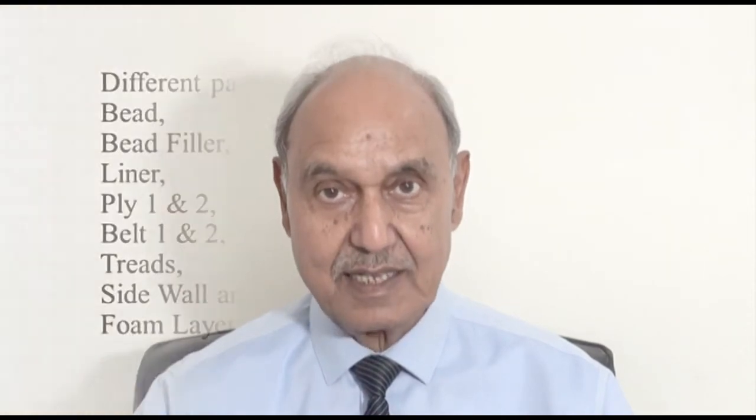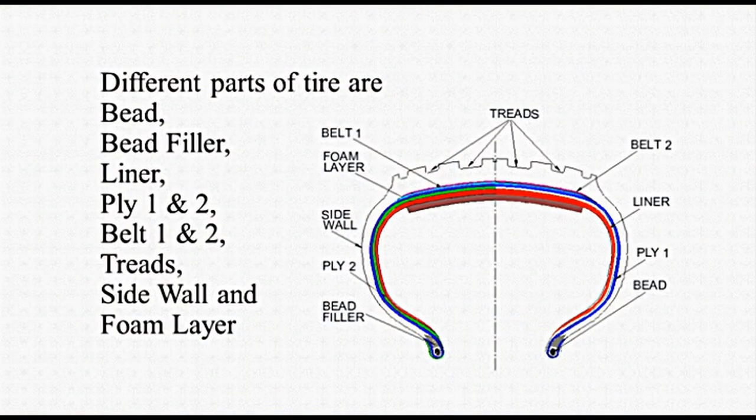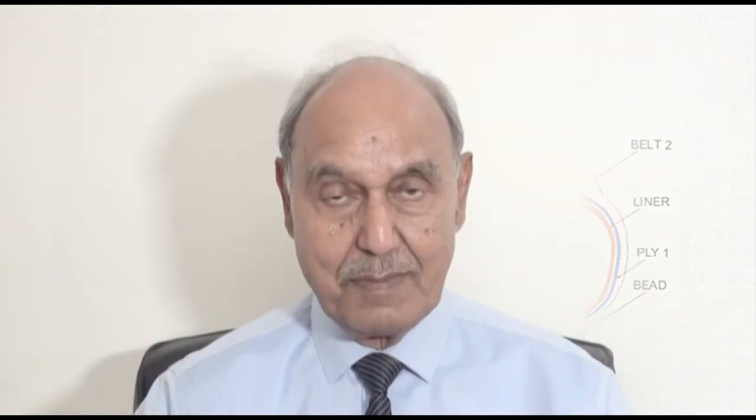Different parts of a tyre are: bead, bead filler, liner, plies shown as ply 1 and 2, belts shown as belt 1 and 2, treads, sidewall, and foam layer. To learn about the details of construction, let us refer to the diagram that gives a cut section.